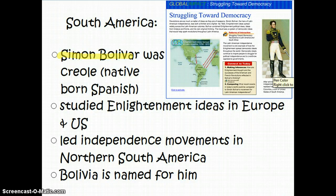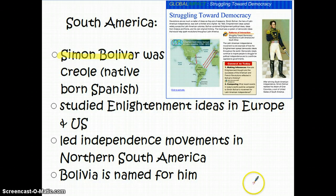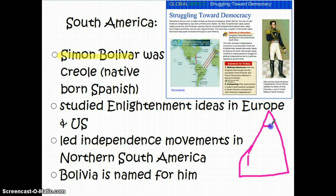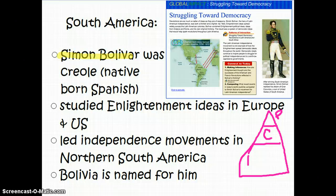Several countries in South America all receive their freedom from Europe at approximately the same time, most of which are going to be led by a man named Simon Bolivar. Bolivar was a Creole. In the Latin American social hierarchy, at the top were the peninsulares — people born in Europe — and then below them were the Creoles, who were native-born Spaniards: born to essentially white parents from Spain but born in Latin America.